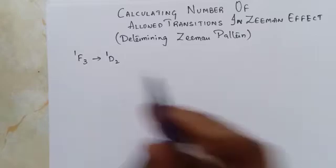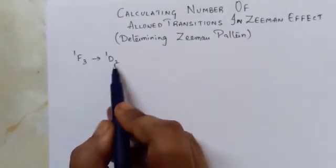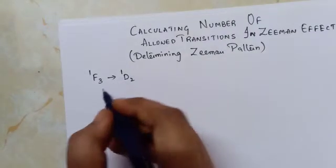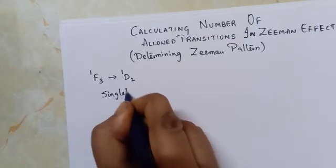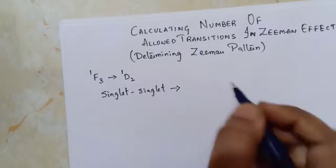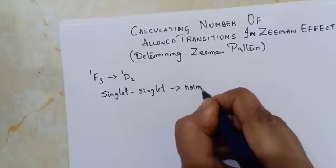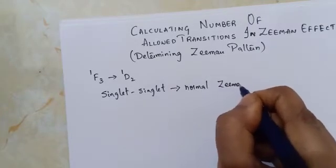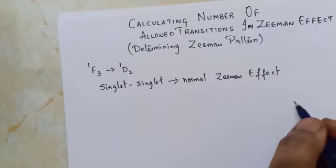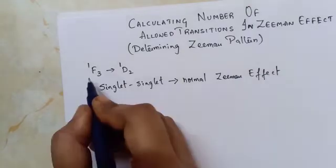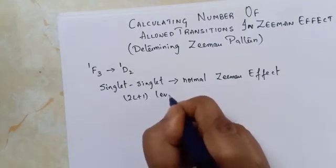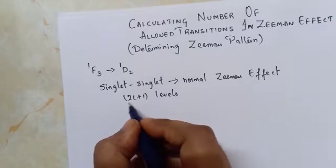First, let us consider the transition 1F3 to 1D2. Here the 2S+1 value is 1, which means it is a singlet, so this is a singlet-singlet transition. A singlet-singlet transition always leads to the normal Zeeman effect. Therefore, this is going to be a normal Zeeman effect, and in normal Zeeman effect every spectral line splits into 2L+1 levels.